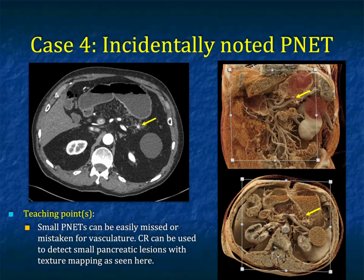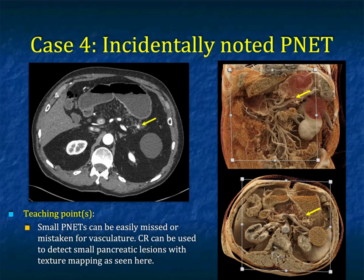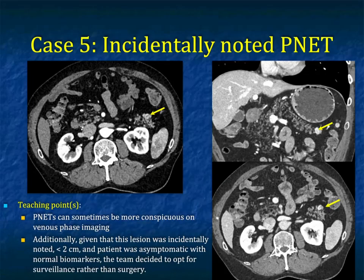Here's another case. The patient has diffuse fatty infiltration of the pancreas. You see what's basically a 5-millimeter hypervascular lesion by the tail of the pancreas, nicely shown on cinematic rendering as well. Cinematic can be very helpful for picking up these small tumors, and you can also see how easy it is to miss them.